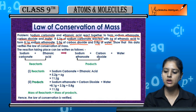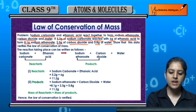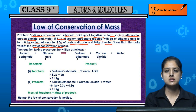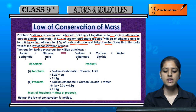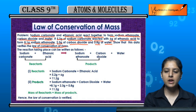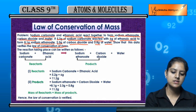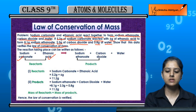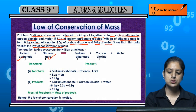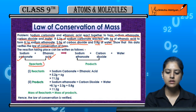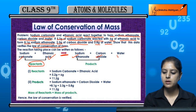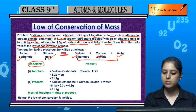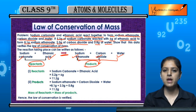We have the amounts of both reactants and products, and we need to verify the law of conservation of mass. Writing it as a reaction: reactants are sodium carbonate and ethanoic acid, and they give sodium ethanoate plus carbon dioxide plus water as three products.